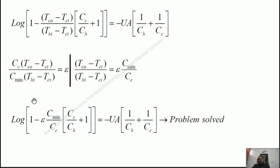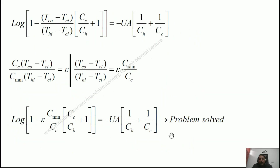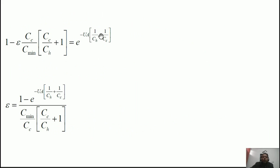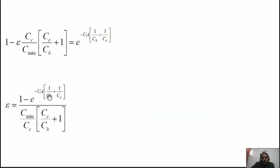Substituting in epsilon·C_min/C_C in place of (T_CO minus T_CI)/(T_HI minus T_CI), all the temperature terms vanish. All remaining quantities — C_min, C_C, C_H, U, A — are known; the only unknown is effectiveness epsilon. Removing the logarithm from the left-hand side places the right-hand side as an exponent of e. Solving for effectiveness at the left-hand side, we get the formula. For the case where C_H equals C_min, substituting C_min in place of C_H simplifies the expression to give (1 plus C_min/C_C) in both the numerator and denominator terms.